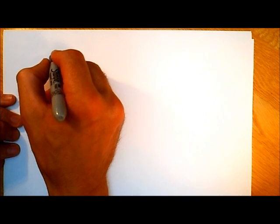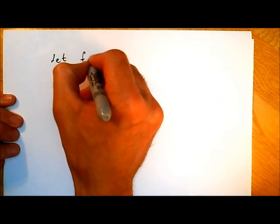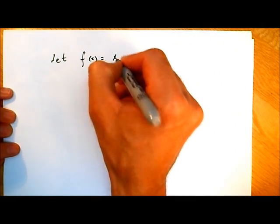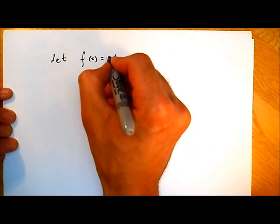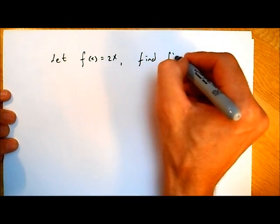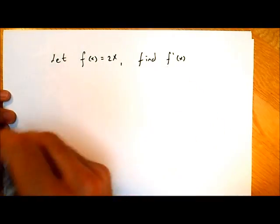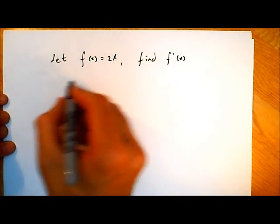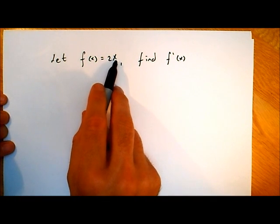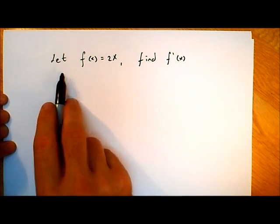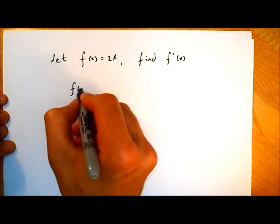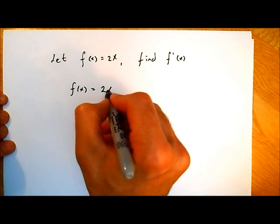Let's say f of x is equal to 2x, and we want to find f dash of x — the slope of f of x. If you notice, there's no power written there, but that doesn't mean there's not a power. The power there is actually 1. 2x is the same as 2x to the power of 1, so now we can use the rule.